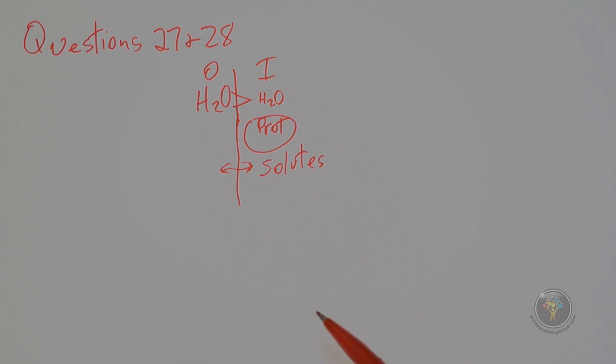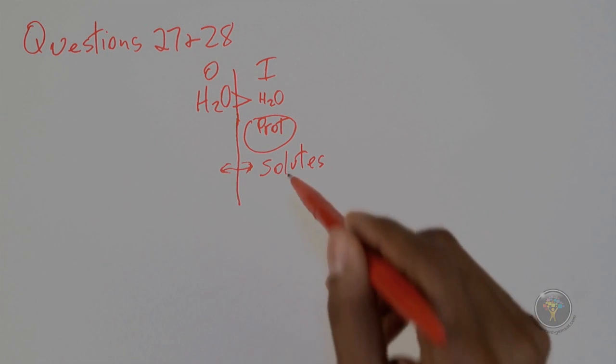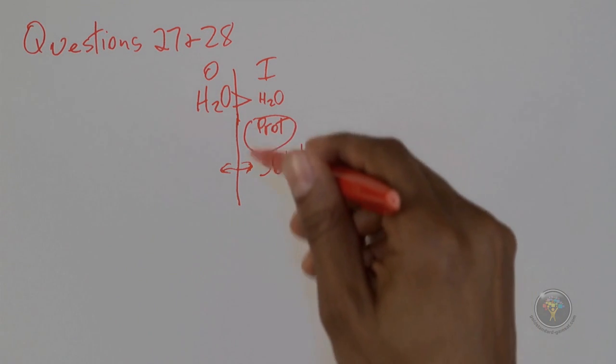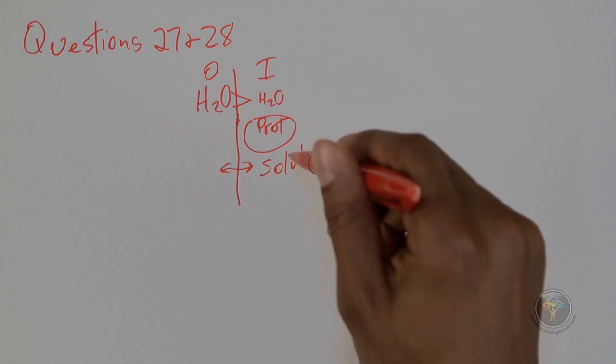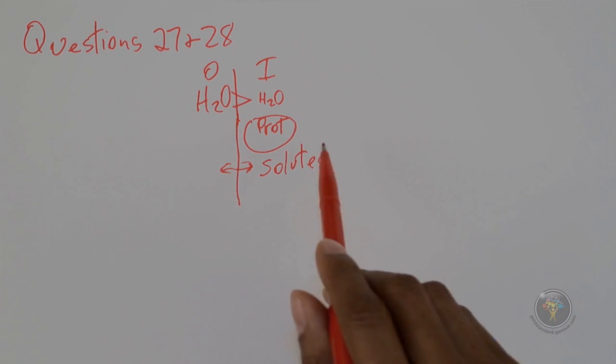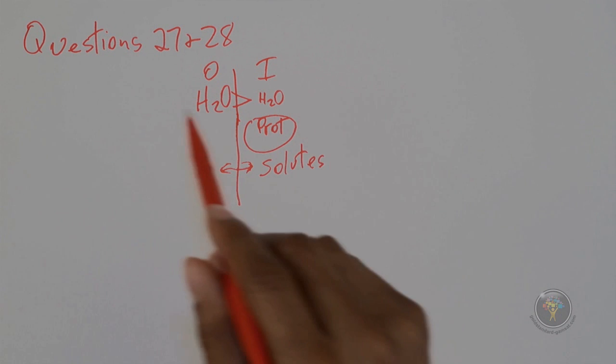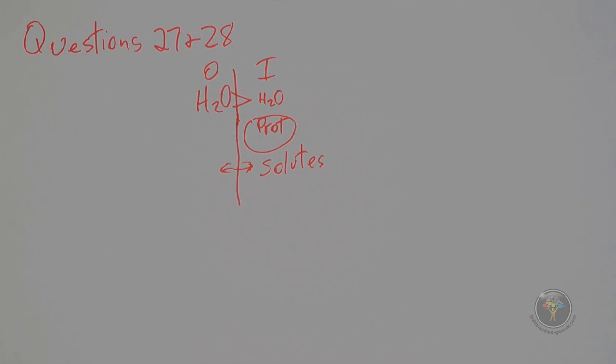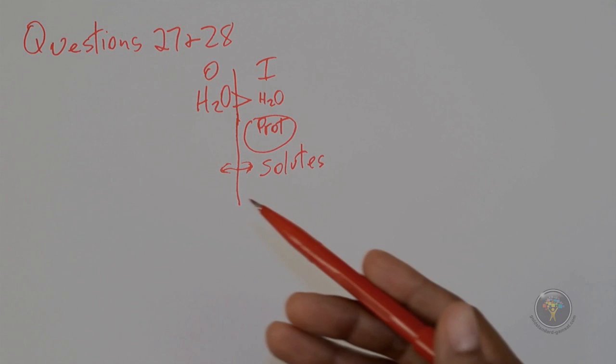So as it goes through the capillary, somehow either through different transport systems or whatever, but the capillary replaces the solute to maintain a high enough concentration of solutes and protein inside the capillary to maintain a driving force for water to come back inside of the vessel. So answer choice D is quite logical.